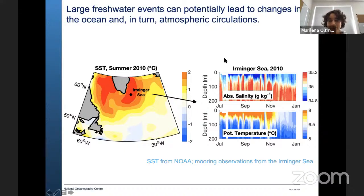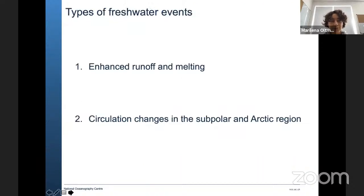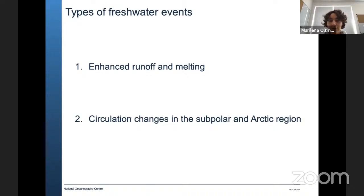By having more fresh water, we can reach lower sea surface temperatures before the water eventually mixes down. This is an important effect on the atmosphere: if we have a colder sea surface, this can lead to changes in the atmosphere. That's mainly the influence I will show in this presentation. The study focuses on two types of freshwater events: one due to enhanced runoff and melting, and one that results from circulation changes in the sub-polar and Arctic regions. Changes in fresh water can also be influenced by precipitation, but we found that only these two types really matter.